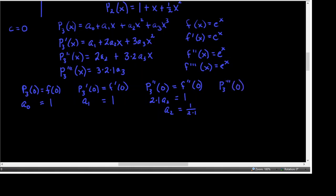The third derivative evaluated at 0 — I want that to equal the third derivative of our function at 0. The third derivative of the polynomial is the constant 3 times 2 times 1 times A sub 3, which equals E to the 0, which is 1. So A sub 3 is 1 divided by 3 times 2 times 1.